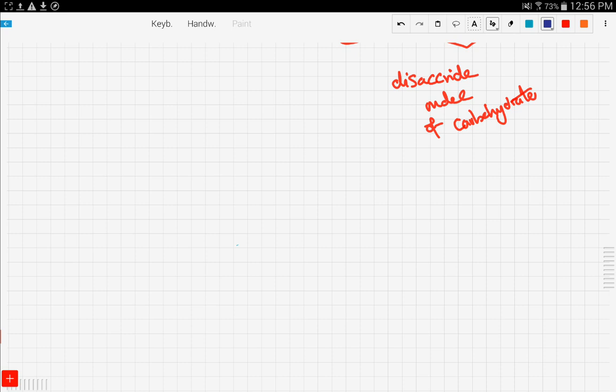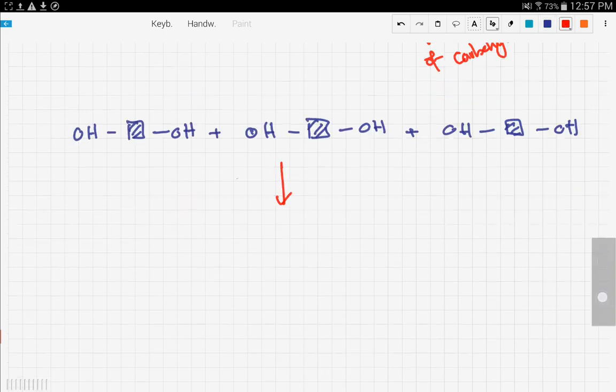So the polysaccharide will be something like this. We have the OH. We have the backbone. Then we have another OH. And then this will react with another glucose and another one and so on and so forth. And this is gonna produce also water.